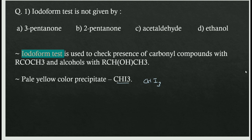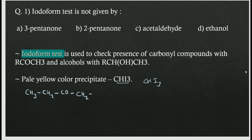The question asks about 3-pentanone. The structure of 3-pentanone is CH3-CH2-CO-CH2-CH3, numbered 1 through 5, with the carbonyl group at position 3.